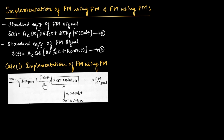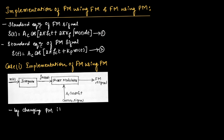By changing the input of the phase modulator to ∫M(t)dt, we can generate the FM signal as shown in this figure. To get the integration of M(t)dt, we can use an integrator with input signal M(t). So we can say, by changing the phase modulator input to ∫M(t)dt, we can generate the FM signal.